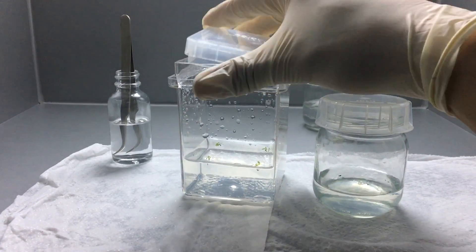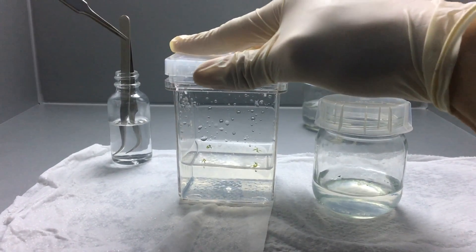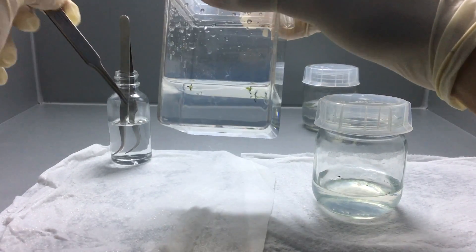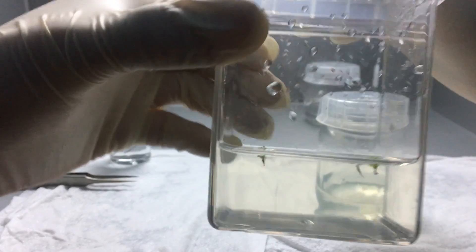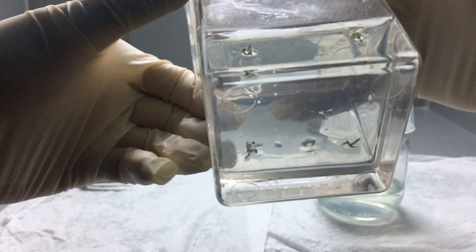All right, so we're all done. We got four roots under the media line and four little plants growing right above. Everything is looking perfect in there.